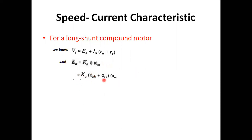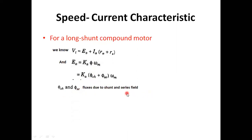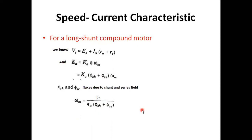Now, if we replace Φ with the actual flux in the case of a compound motor — that is, flux due to shunt field and flux due to series field — then Φ will be replaced with Φ_SH + Φ_SE, where Φ_SH and Φ_SE are the fluxes due to the shunt field and series field respectively. So we get: ωm = Ea / (Ka × (Φ_SH + Φ_SE)).